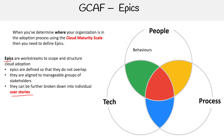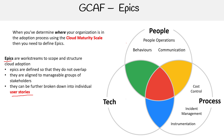Under people, we have behaviors, people's operation, and communication. Under process, we have cost control, incident management, and instrumentation.